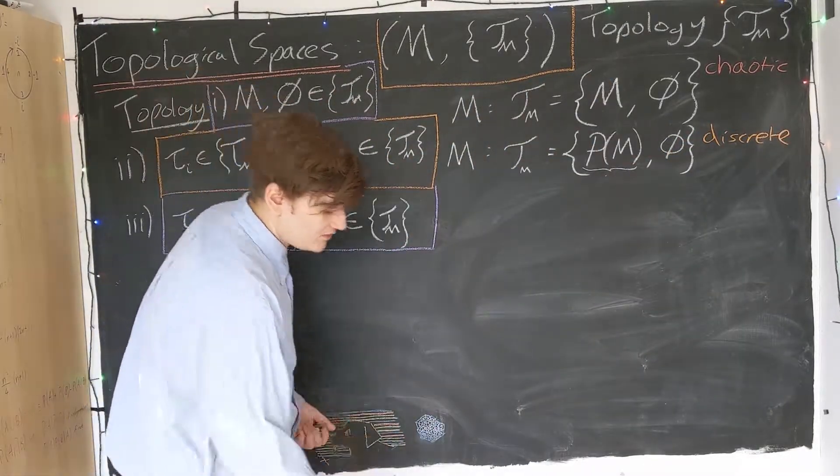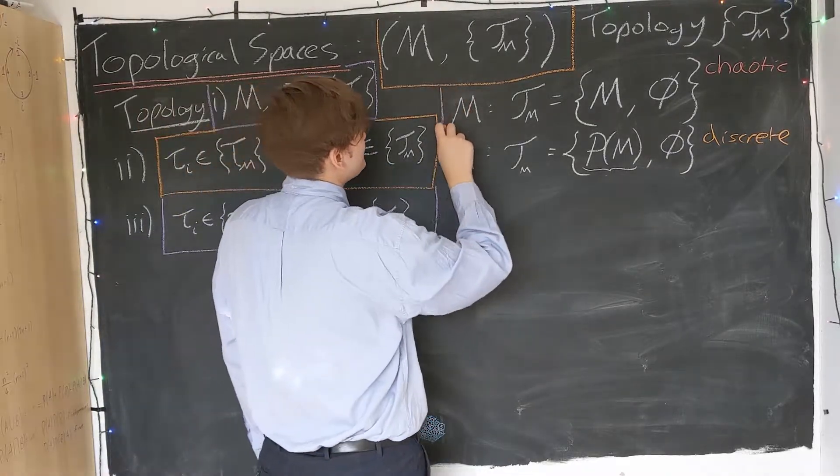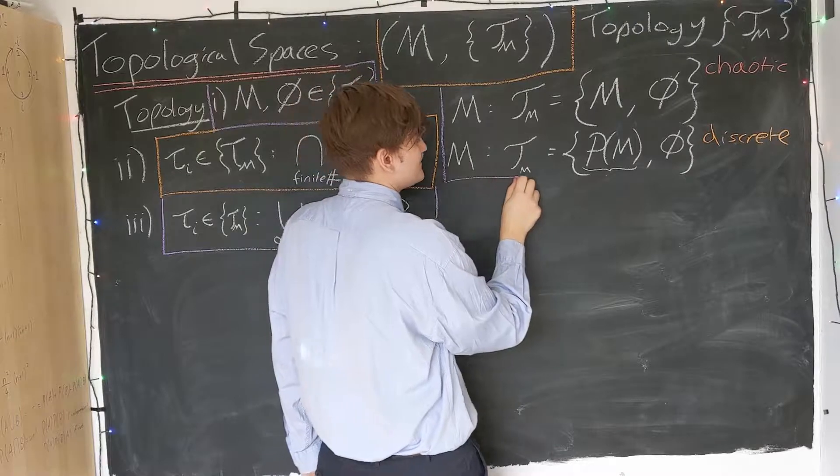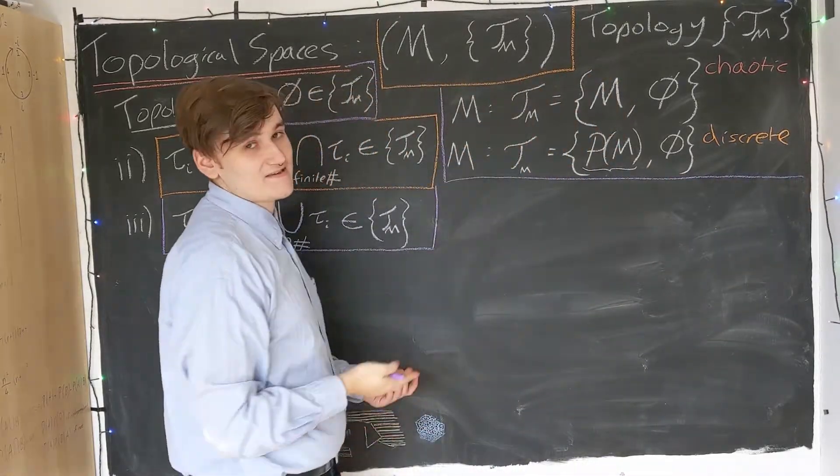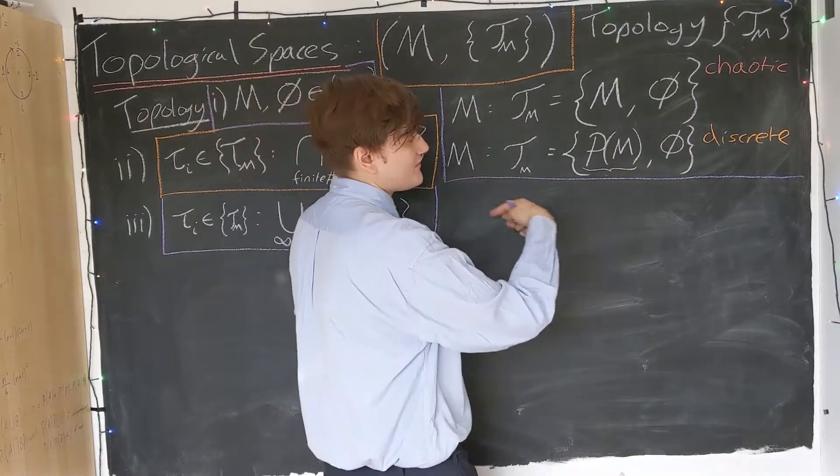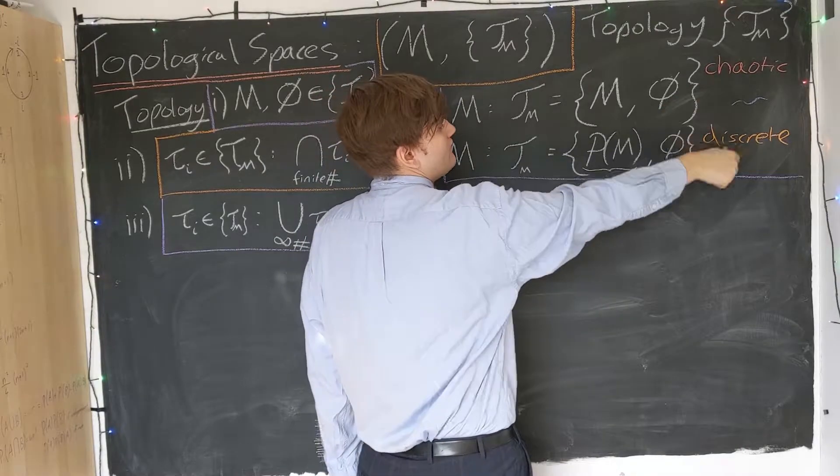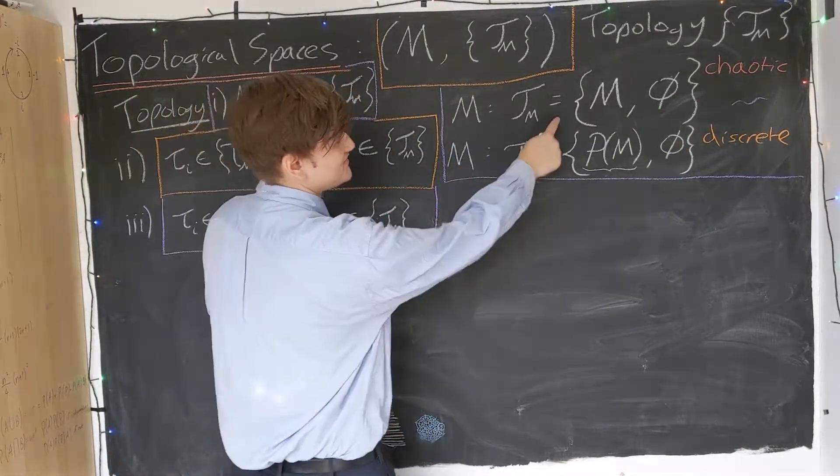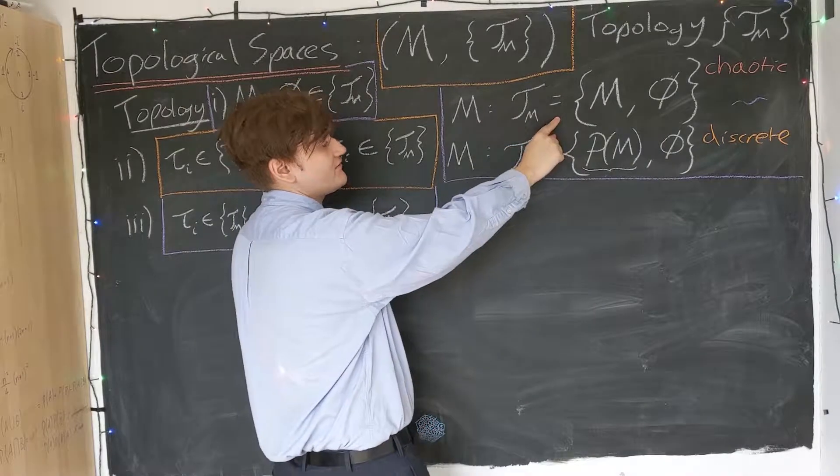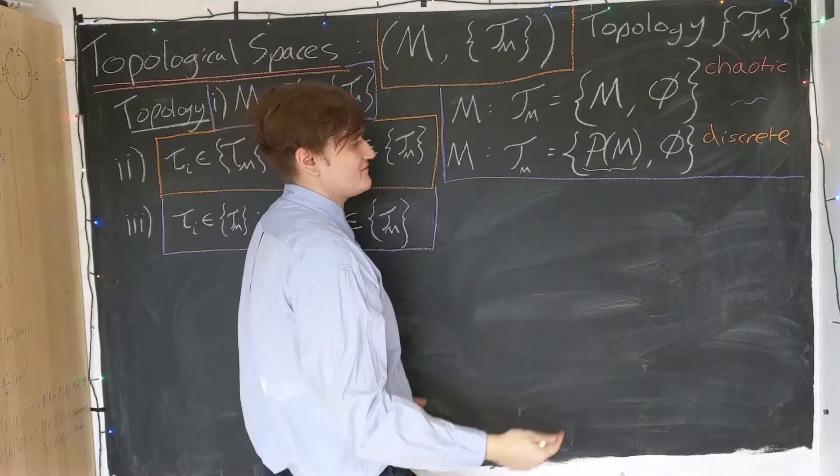So this is often called the discrete topology. And now these two topologies kind of, if you like, define the limits of where our topologies can exist. These two extreme cases, they are the extreme cases. Any other topology is going to lie somewhere between these two extreme cases. So if you like, this is the smallest possible topology we can define, and then this is the largest or most extensive possible topology.